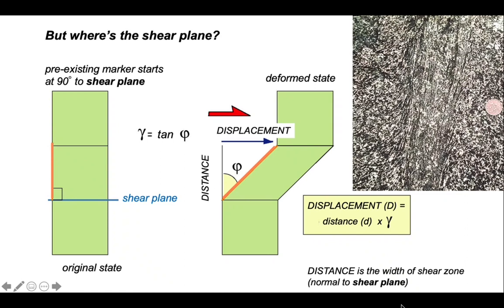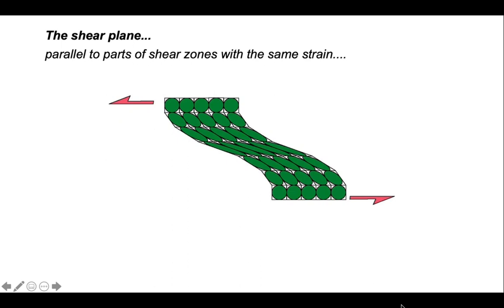But if we look on the photograph, there's no label on it that says, I am a shear plane. We need to be able to establish the shear plane orientation. So let's consider what the shear plane is.